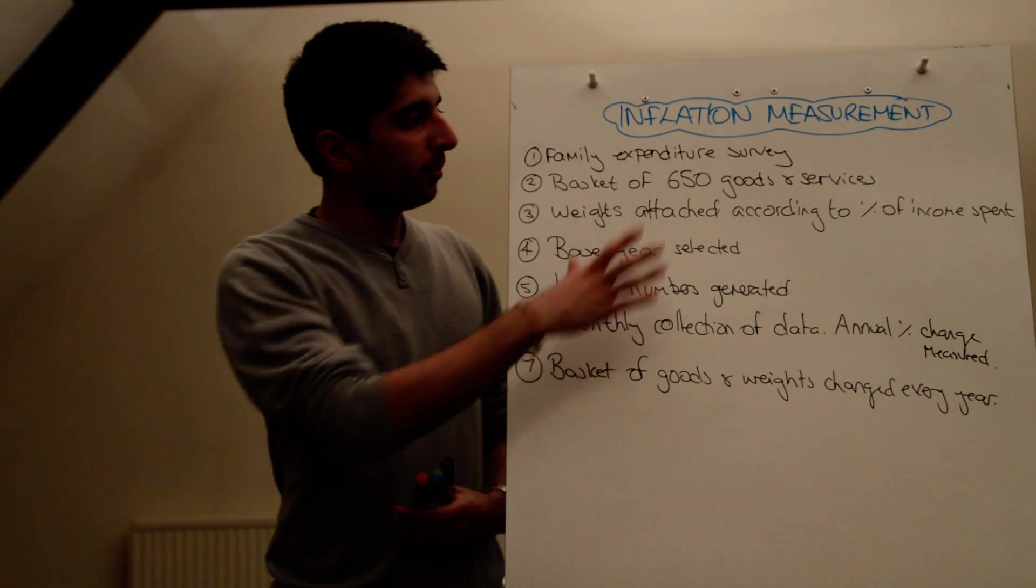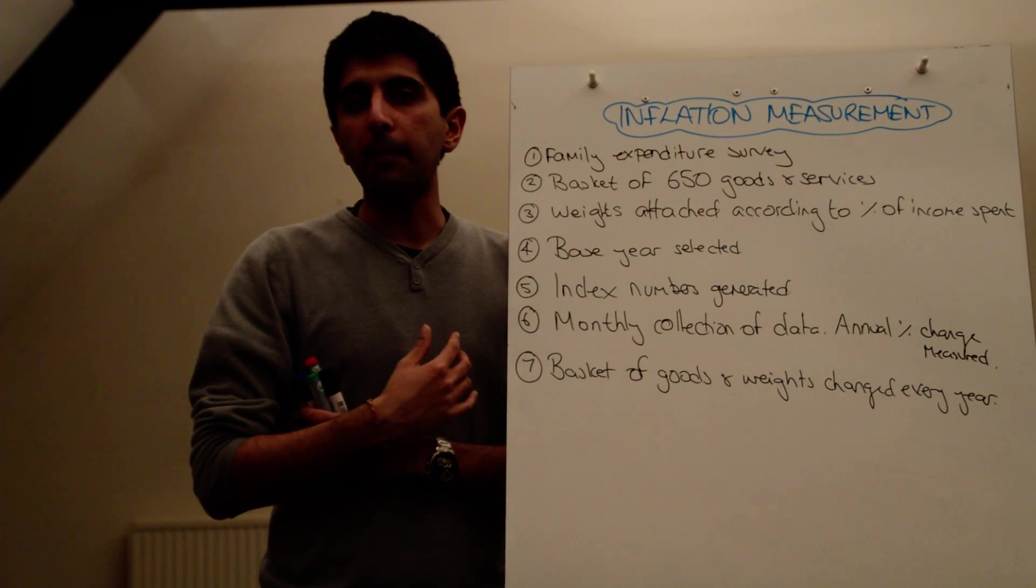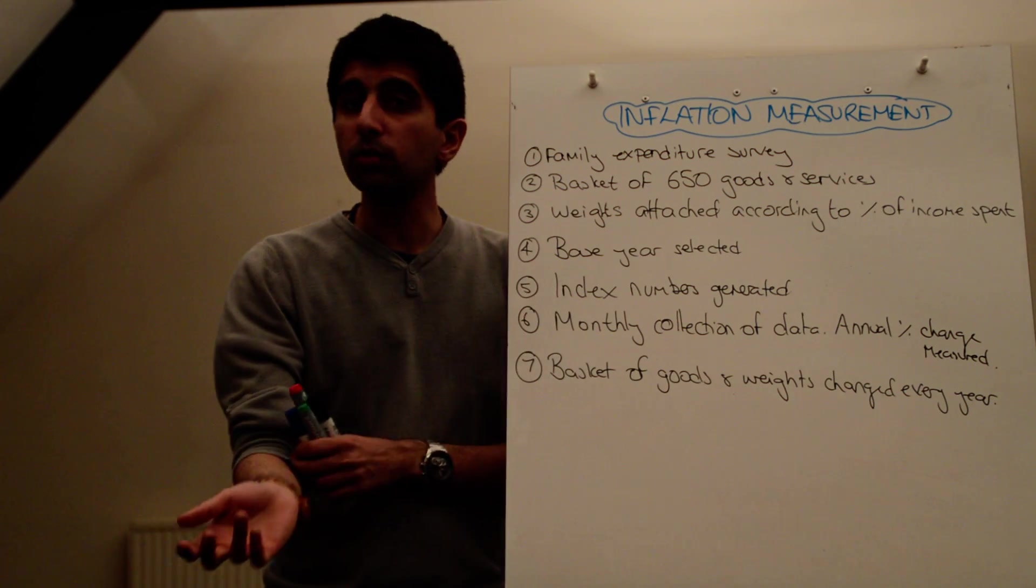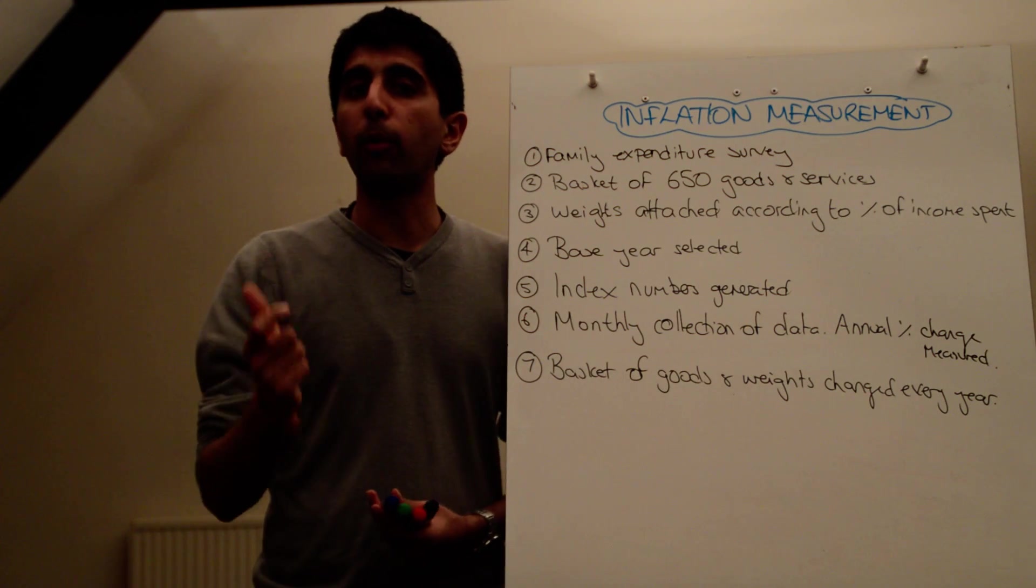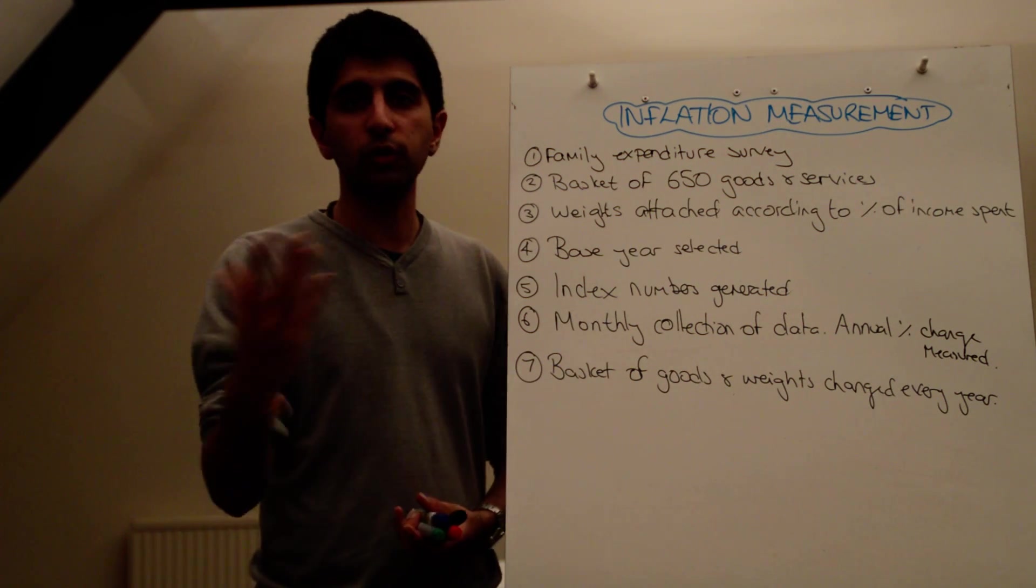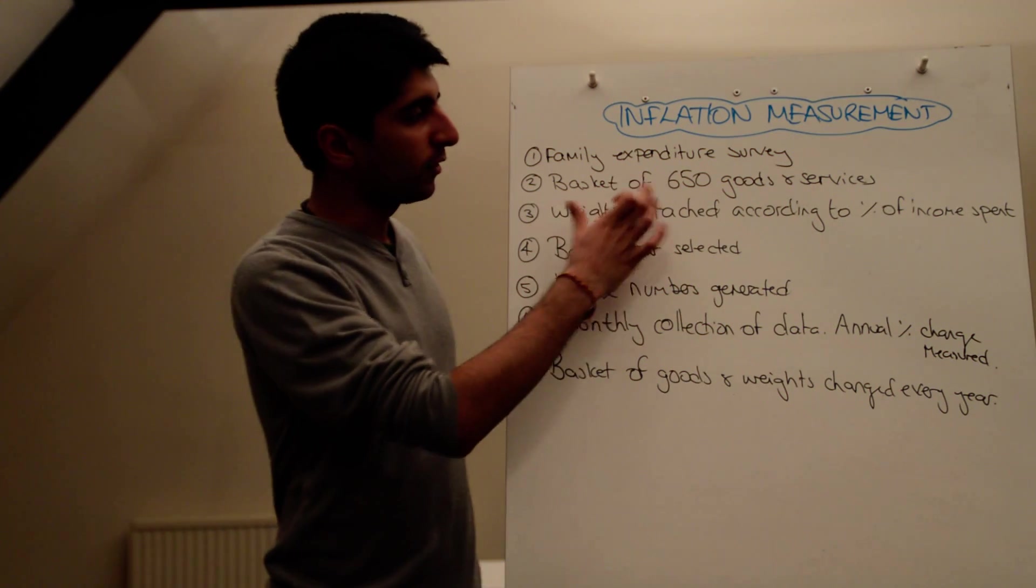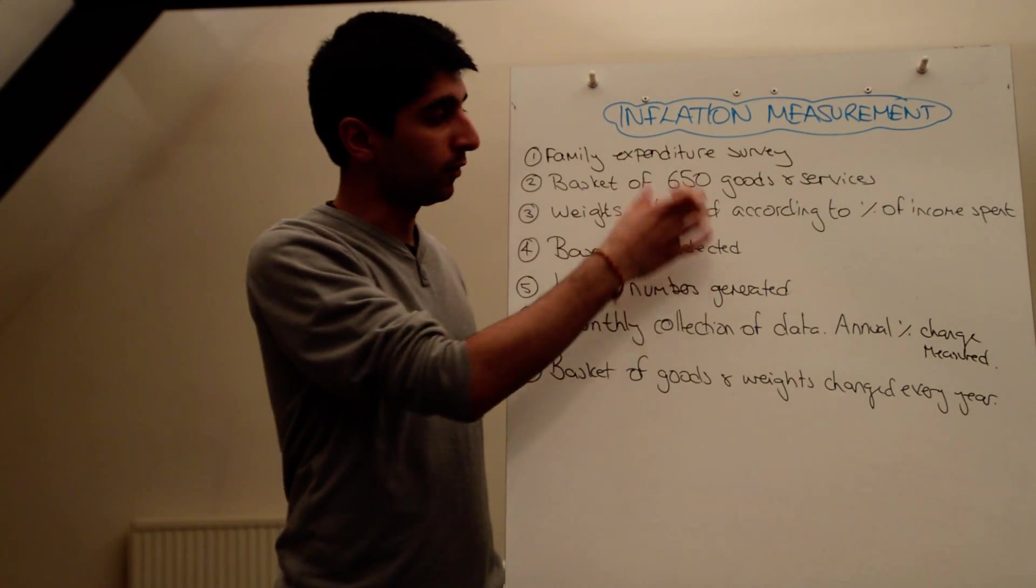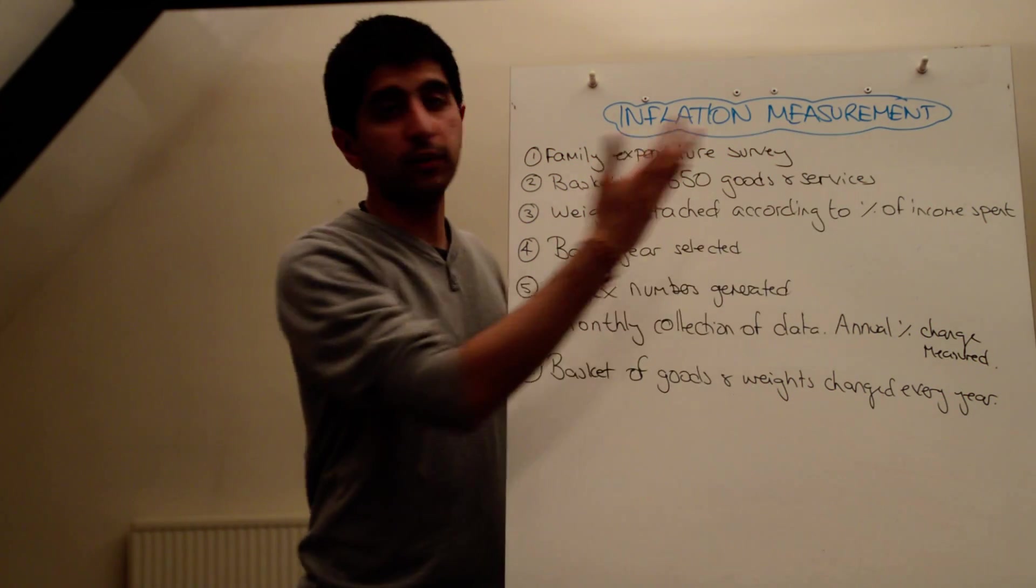So if, from the survey that's come out, 50% of people's income is spent on fuel, which is ridiculous as that, then the weighting on fuel would be 0.5. So between 0 and 1, 0.5 would be the weighting. So that's how it's done. Weights are attached to all of these goods and services, all 650, given the percentage of income spent on these goods and services.